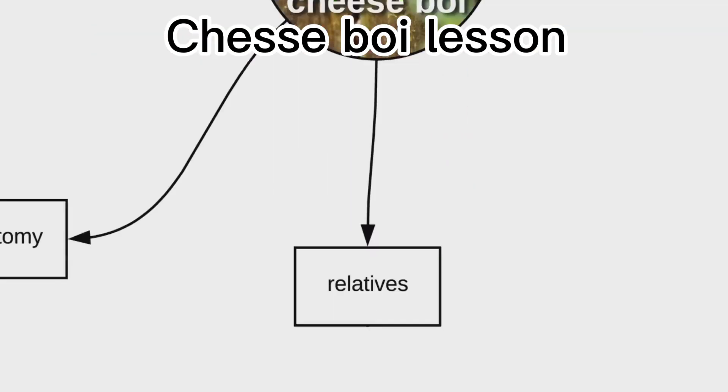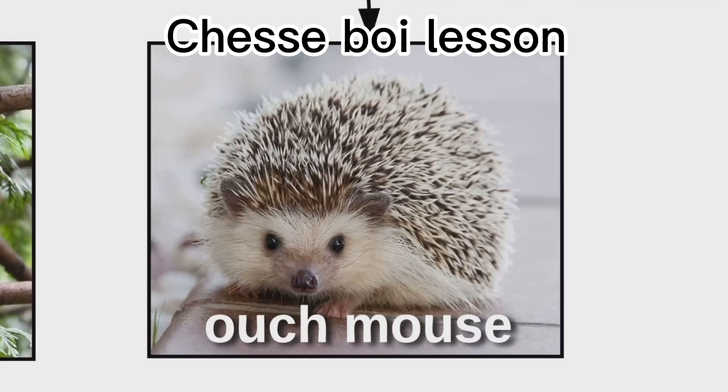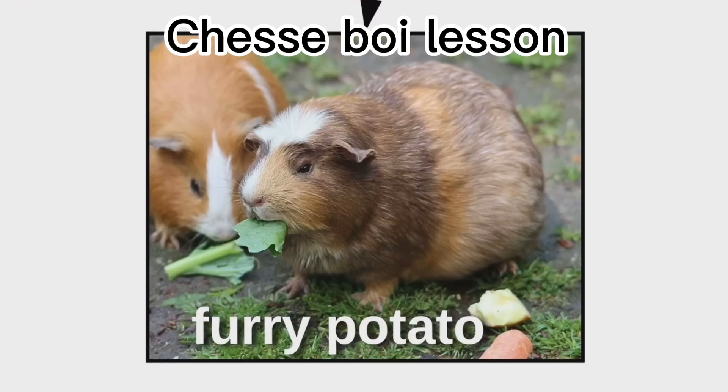Cheese boys have many relatives, like the tree rat, the ouch mouse, also called the spiky floof, the furry potato, the guinea big, and mouse.